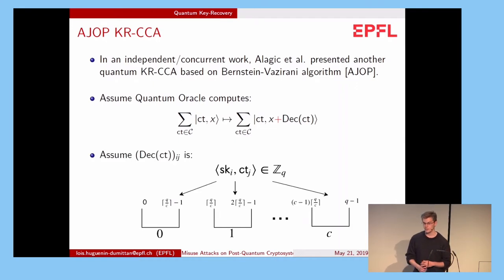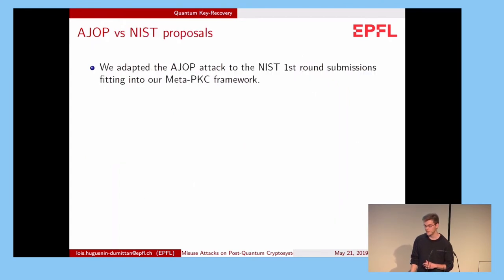And secondly, the decryption of one element must be of the following form. It's the inner product of a subset of the secret key with a subset of the ciphertext. And then in the decoding phase, we cut ZQ into C intervals, C some parameter, and we output the corresponding interval. So for example, if the inner product is between Q over C and 2Q over C minus 1, we output 1. So these are the strong assumptions. And we adapted this attack to the NIST first-round submissions fitting into our meta-PKC framework, as we did for the other attacks.